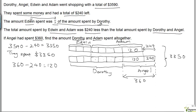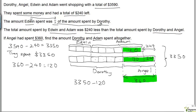Altogether they spent $3,350. This is where we really start solving. We've got $360 here and $120 here, so let's subtract $360 and $120 from $3,350: $3,350 minus $120 minus $360.